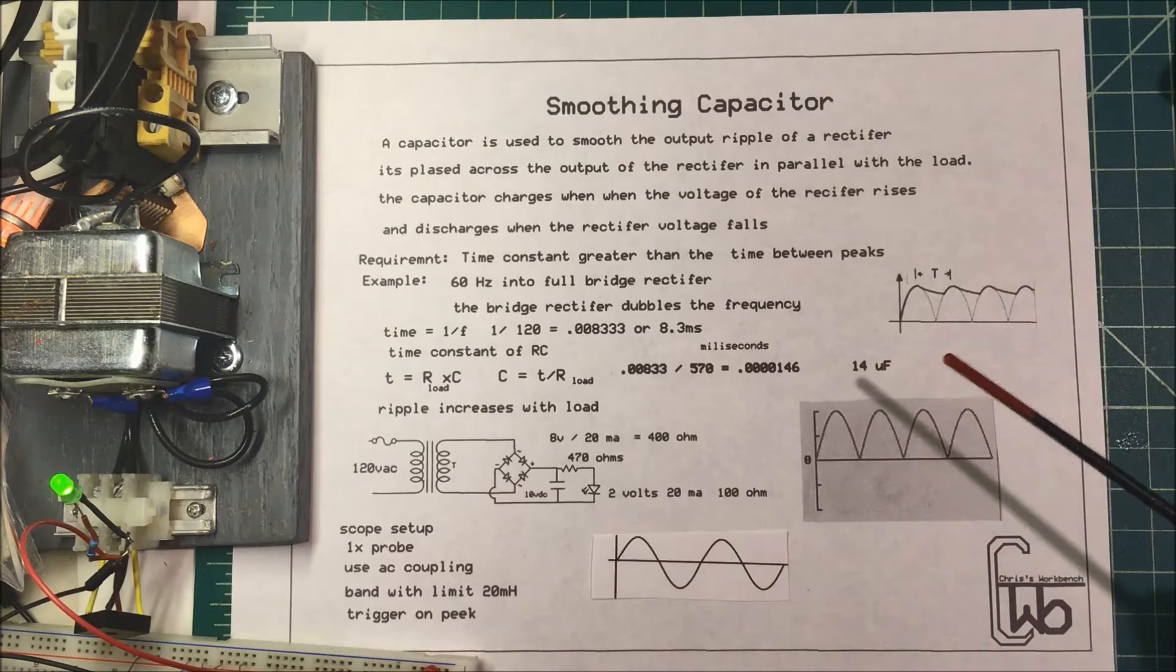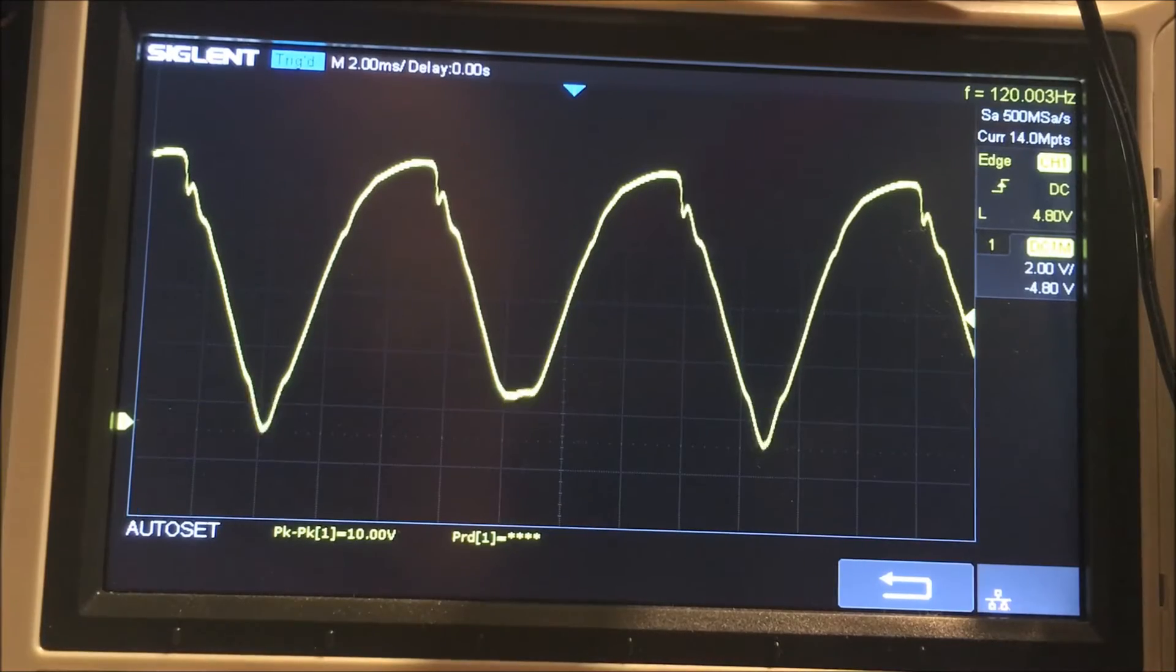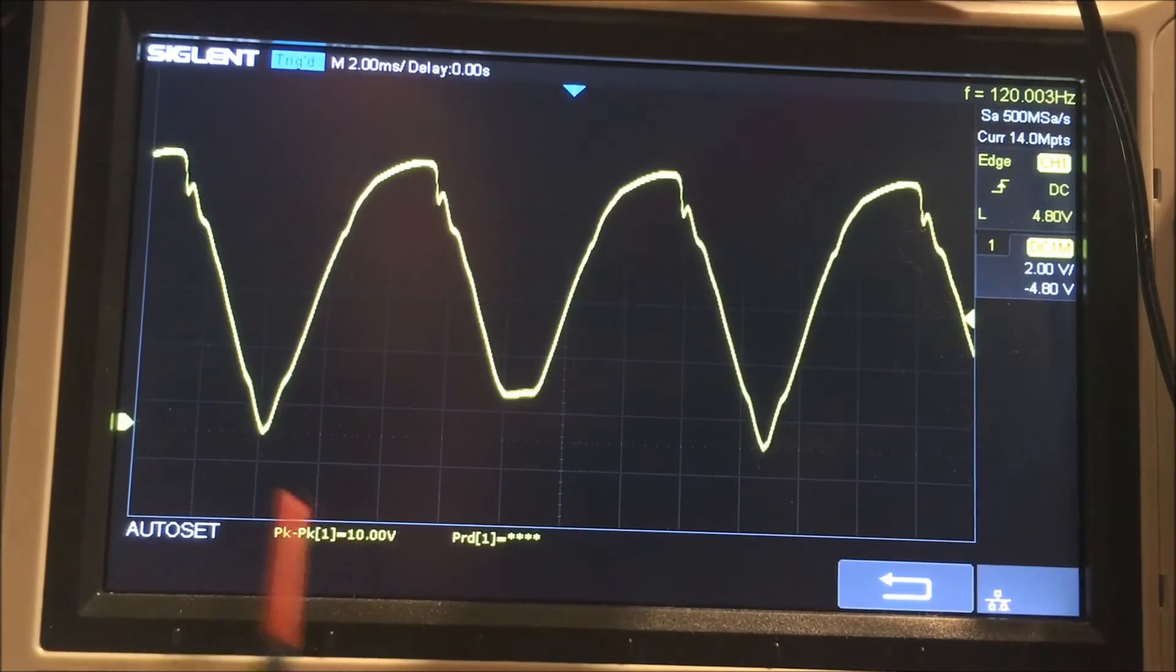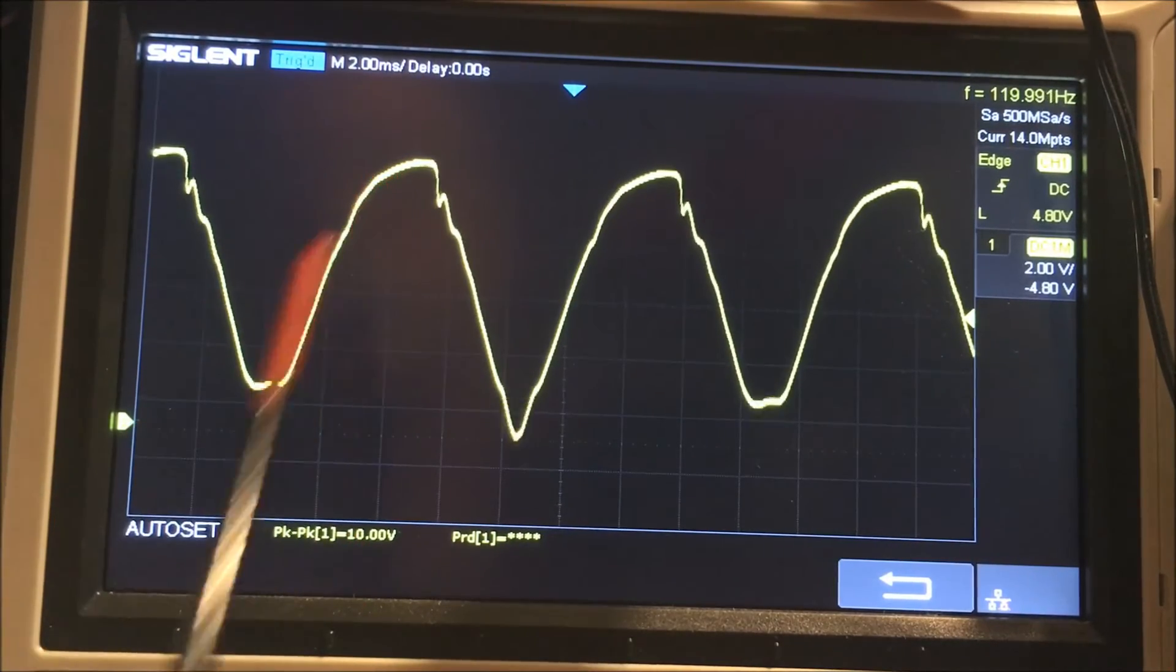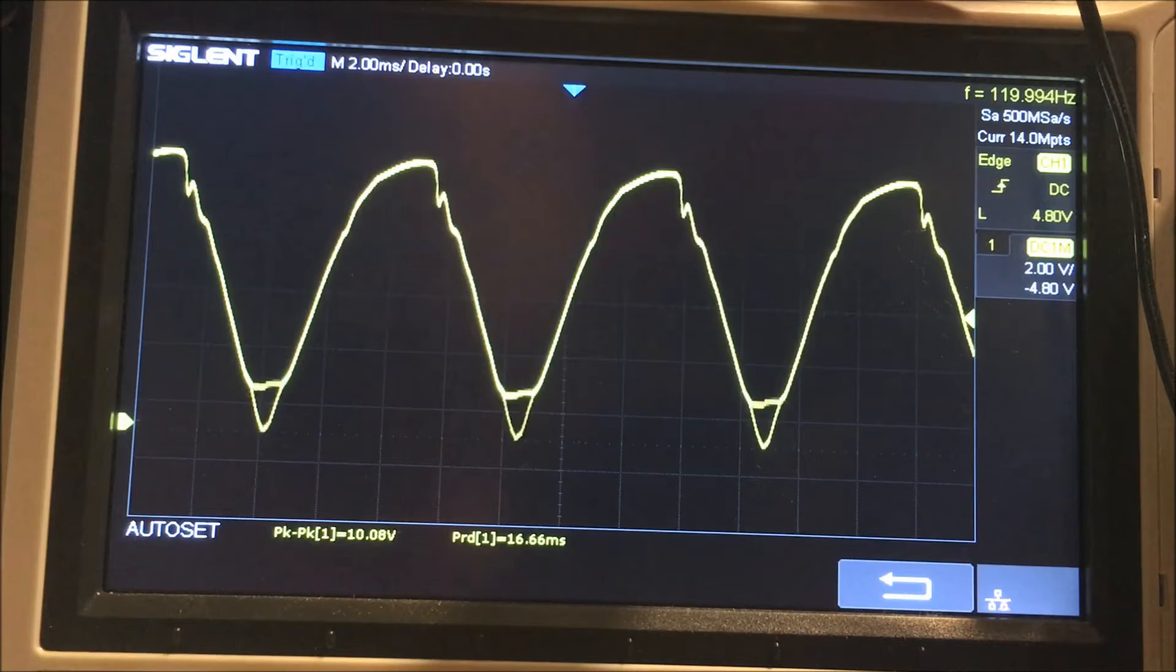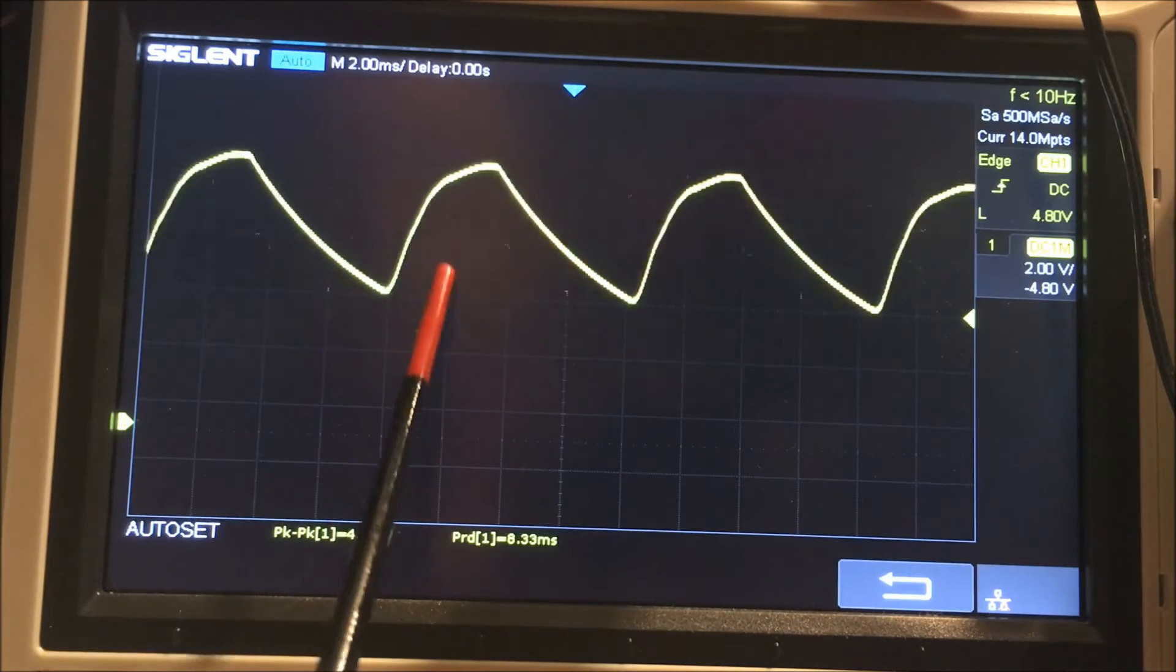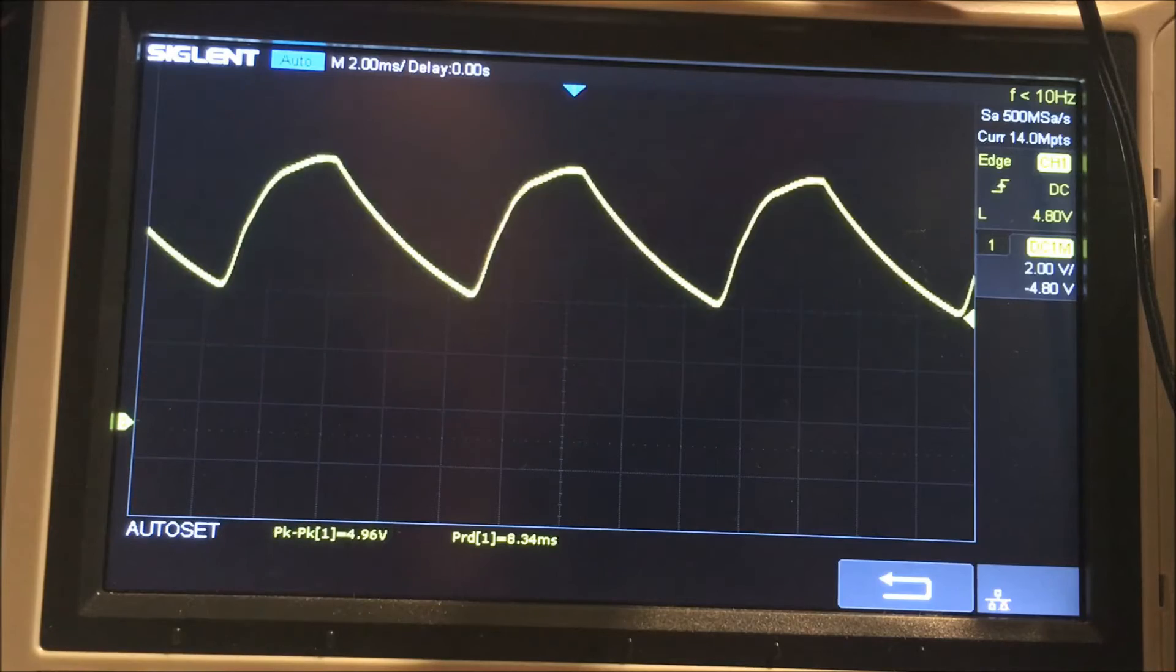Here we are at the oscilloscope. I've got it AC coupled. This is zero, I've got 10 volts to the peak here, 120 hertz. I'm going to add in 10 microfarads. That cut the ripple down to 5 volts peak to peak.